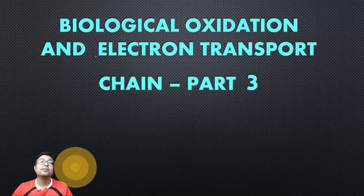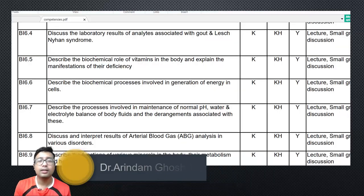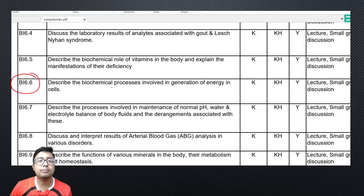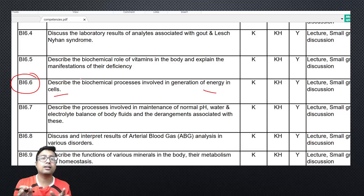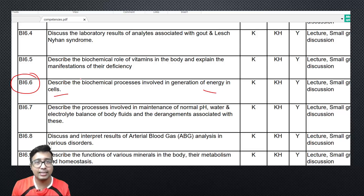Hello students, welcome back to the third part of the four-part series on biological oxidation and electron transport chain, as per undergraduate competency BI 6.6 of biochemistry, which says: describe the biochemical processes involved in the generation of energy in the cells. The NCI Medical Council of India does not make any concrete statement on the chapter, but we will take on biological oxidation and electron transport chain as it is needed for first-year undergraduate medical students.